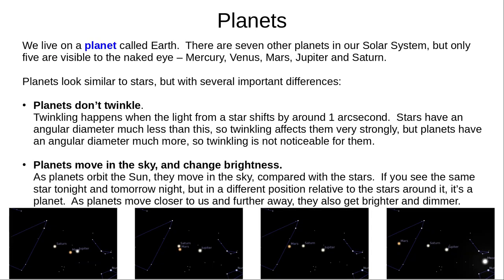Our solar system has eight major planets, including Earth. Only five are visible in the sky without telescopes: Mercury, Venus, Mars, Jupiter and Saturn, as well as very rarely Uranus. Planets look very similar to stars, but there are two main differences. One: planets don't twinkle. Twinkling shifts the light from a star by around one arc second. Since stars are much smaller than this, twinkling is very noticeable. But planets are usually much larger in angular size, so we don't notice twinkling.